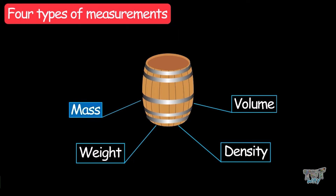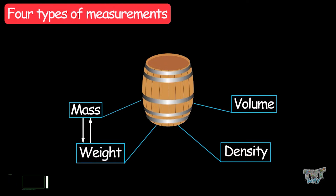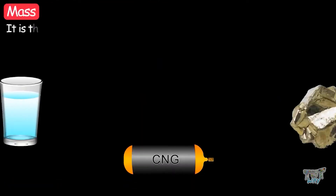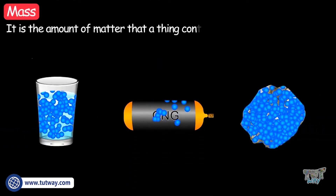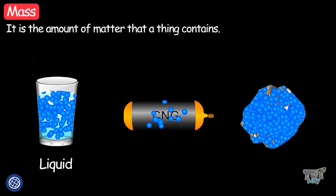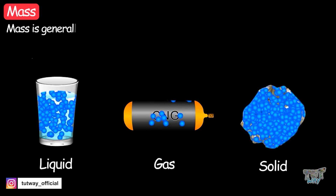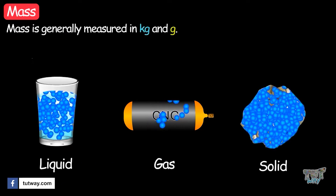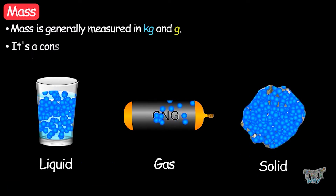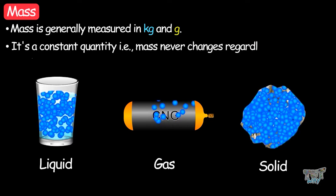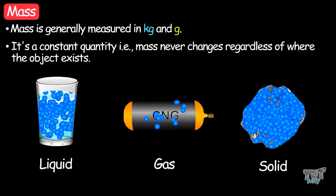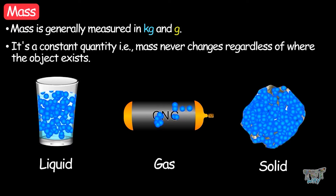Mass and weight are often used interchangeably in general, but they have different meanings. Mass is the amount of matter that a thing contains, and a thing can be a liquid, gas, or solid. Mass is generally measured in kilograms and grams. It is a constant quantity — mass never changes regardless of where the object exists.